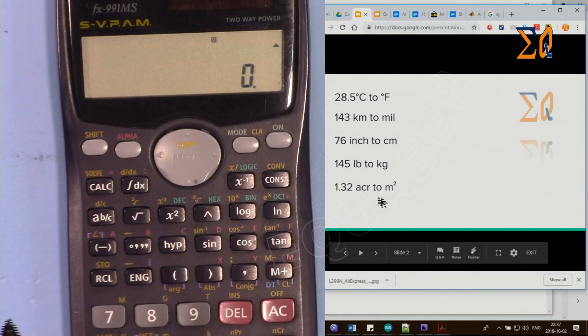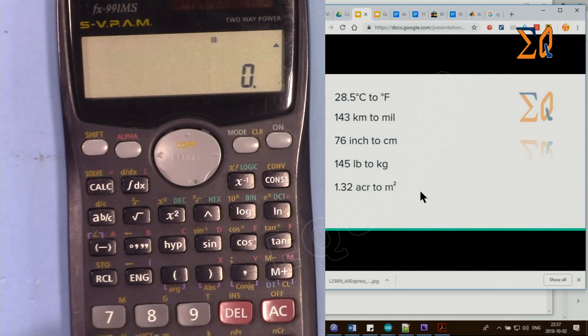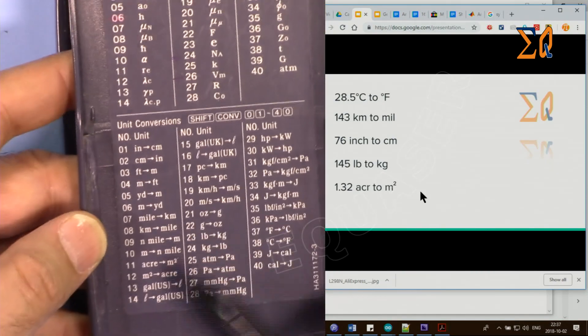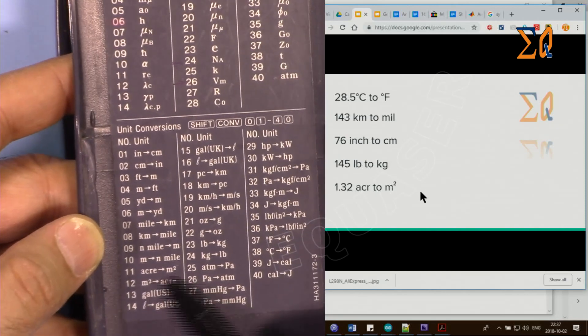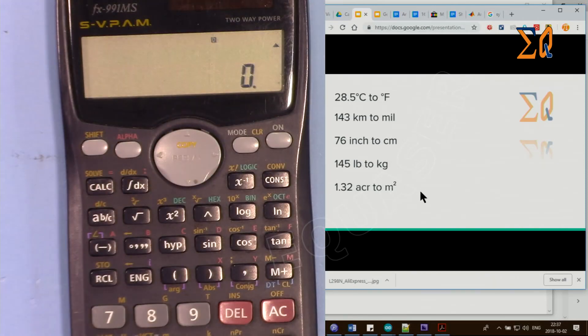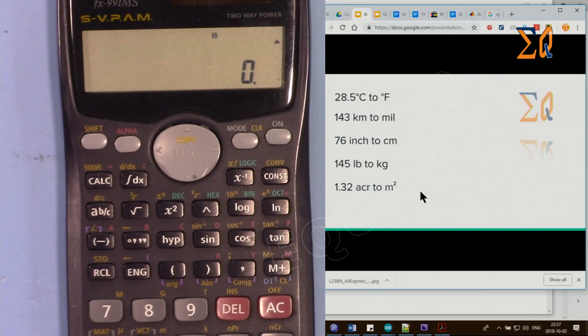If you want to convert 1.32 acres to meter squared, acre to meter squared is number 11. 1.32, second function, 11, acre to meter squared. That's 5,341.8 meters squared.